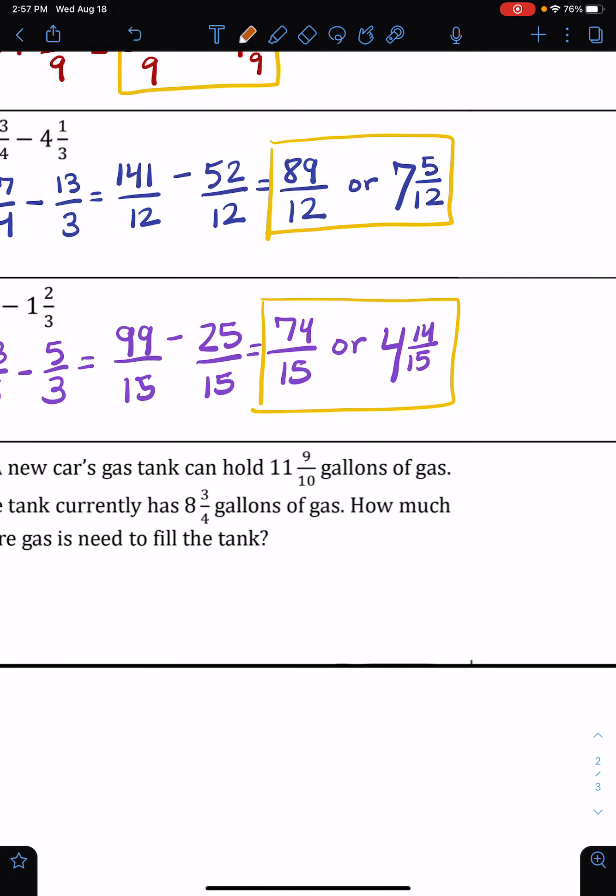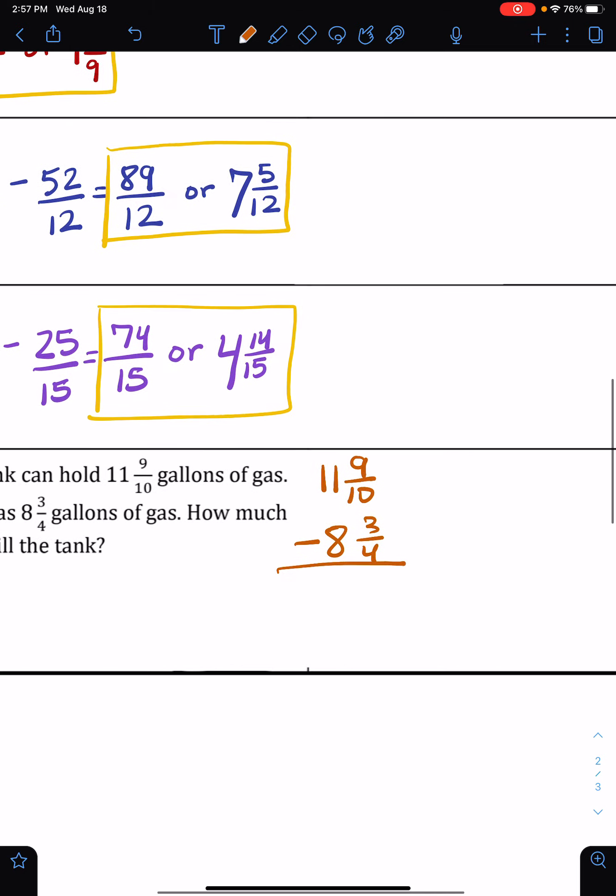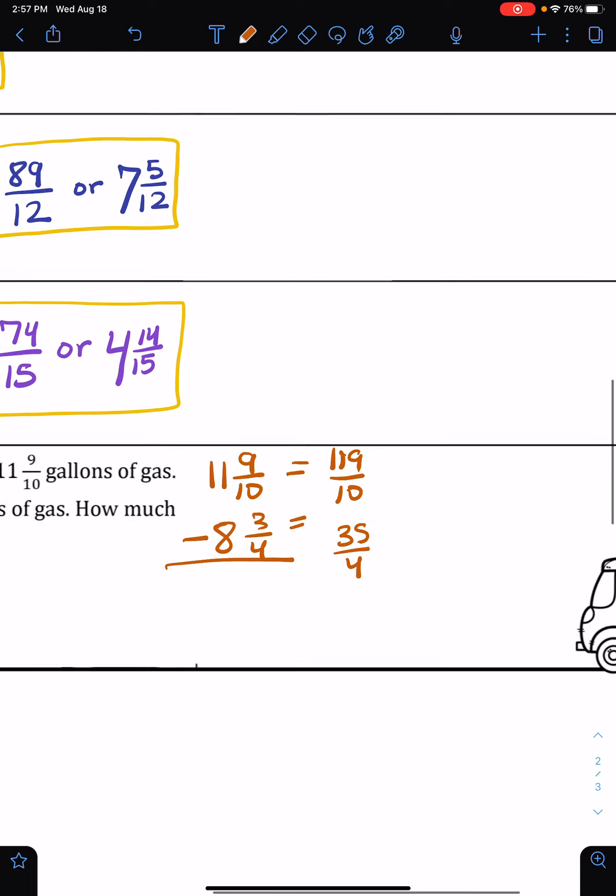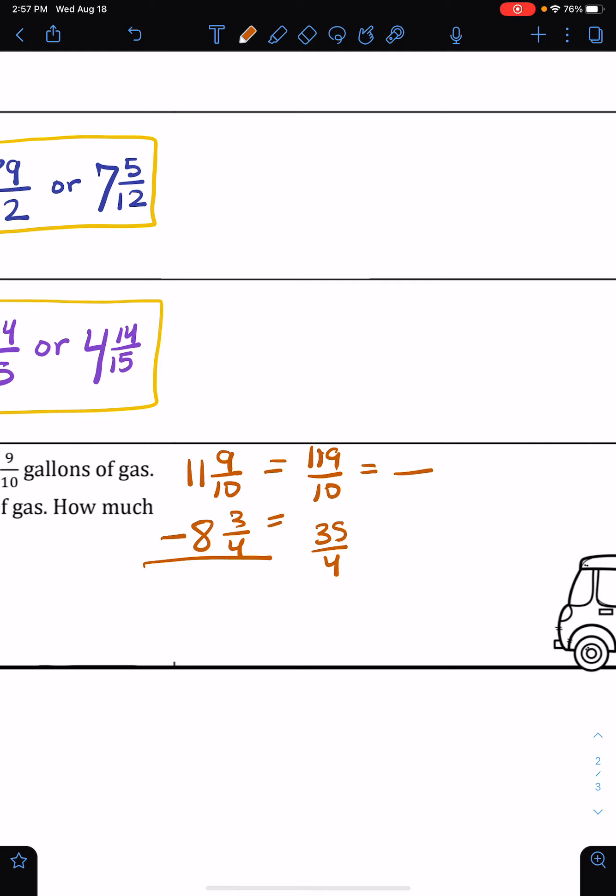It holds 11 and 9 tenths, it already has 8 and 3 fourths. We want to know how much more it will take to be full. So I'm going to change this. We have 11 times 10 is 110, so 119 over 10. And then 32 plus 3, so 35 fourths. This is going to become something over 40 to get my common denominator.